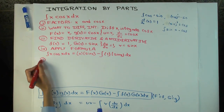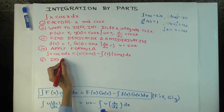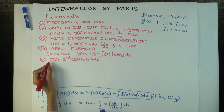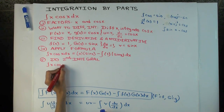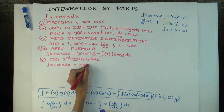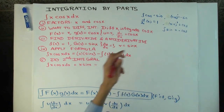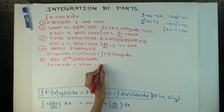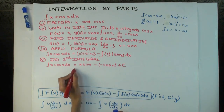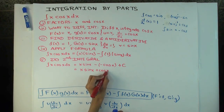The next step is to do a further integration. Continuing: x·sin x minus the integral of sin x. The integral of sine is negative cosine. Once you have no integral signs, put a plus C on your expression. Simplified, the answer is x·sin x + cos x + C.